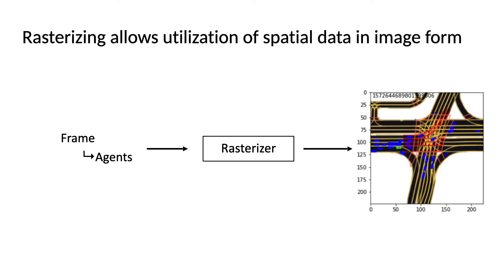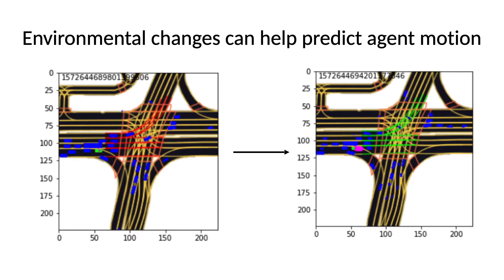So now we'll go over a quick exploratory data analysis using a bird's eye view of the data. As you saw before, we can take our frame, which consists of a set of agents, pass it through a rasterizer, and produce a bird's eye view of that frame. This gives us important spatial information about this frame, such as cars around the target vehicle, the lane lines, and the current traffic light state. Here you can see the difference between two timestamps and that the traffic light turned from red to green. This information can help predict future motion, since when the light turns green, we can predict with a high confidence that the cars will start to cross the intersection.